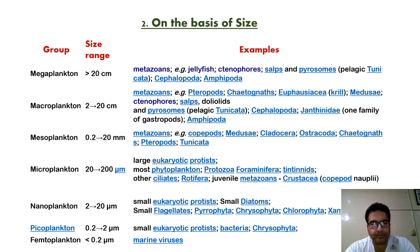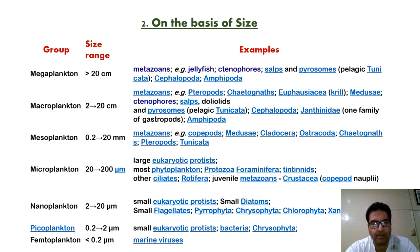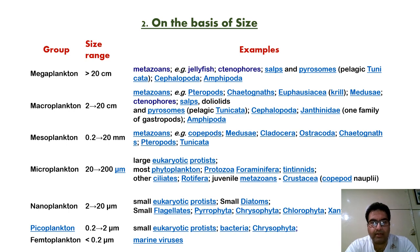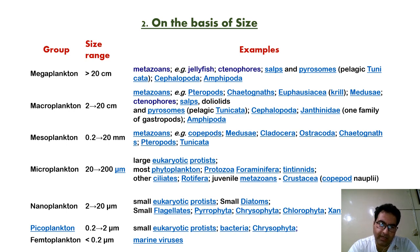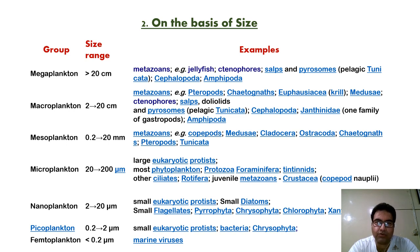Microplankton have a size of 20 to 200 micrometers — certain large protists, most phytoplanktons, protozoans, foraminiferans, ciliates, rotifera, and metazoans come under this group. Nanoplankton are 2 to 20 micrometers in size, including small eukaryotic protists, diatoms, flagellates, Pyrrophyta, Chrysophyta, and Chlorophyta. Picoplankton are 0.2 to 2 micrometers — small eukaryotic protists, bacteria, and Chrysophyta. Femtoplankton are regarded as the smallest organisms, and most of the marine viruses come under this category.